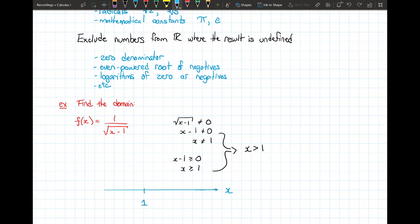1 is here somewhere along the number line. Because we found that x can be only greater than 1, we can shade in all of the values on the real number line greater than 1. Now we have an issue here. 1 cannot be included.